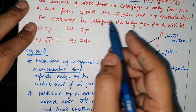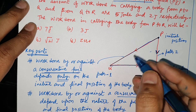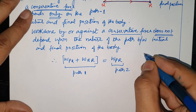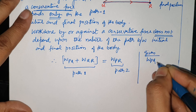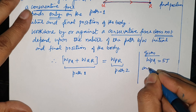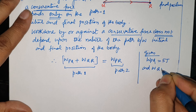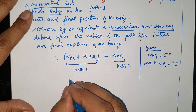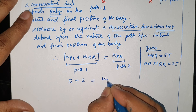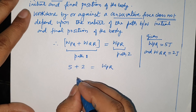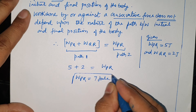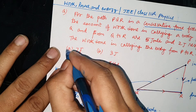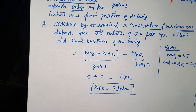W(PQ) hamein given tha — P se Q tak ka work done given tha — 5 joule. Aur W(QR) = 2 joule. Toh W(PR) = 5J + 2J = 7 joule. Isliye hum iska answer 7 joule bata sakte hain. Theek hai, padhte rahiye aur khush rahiye. Thank you.